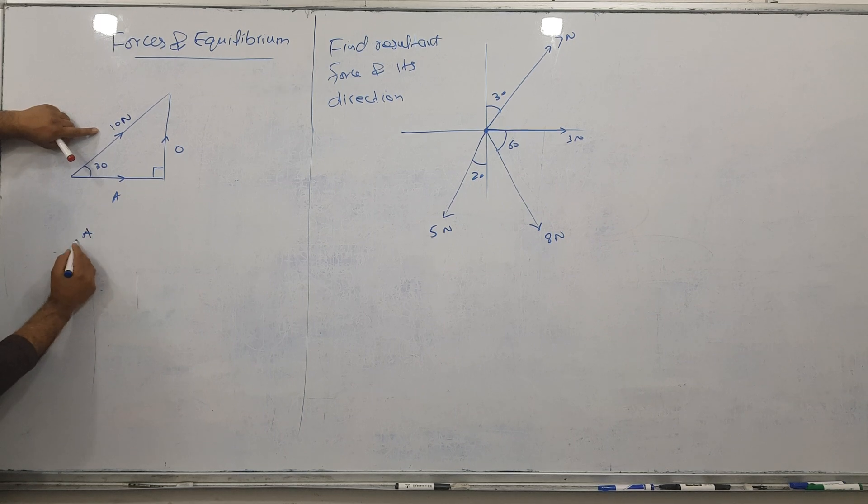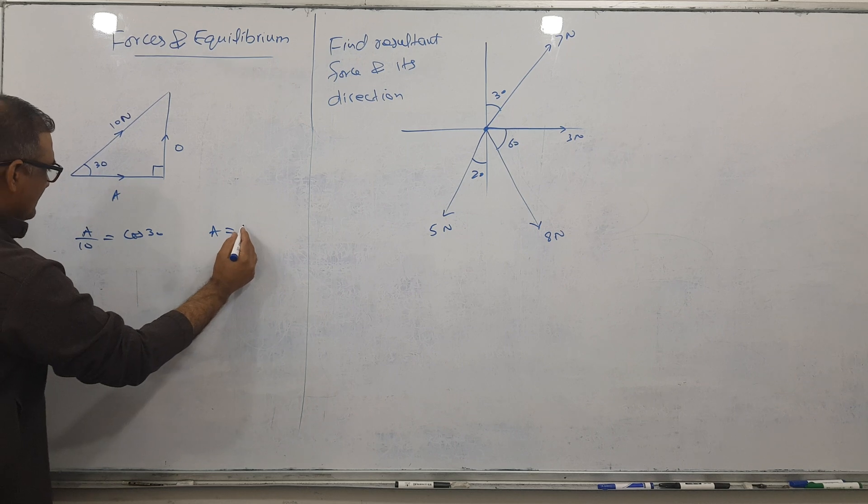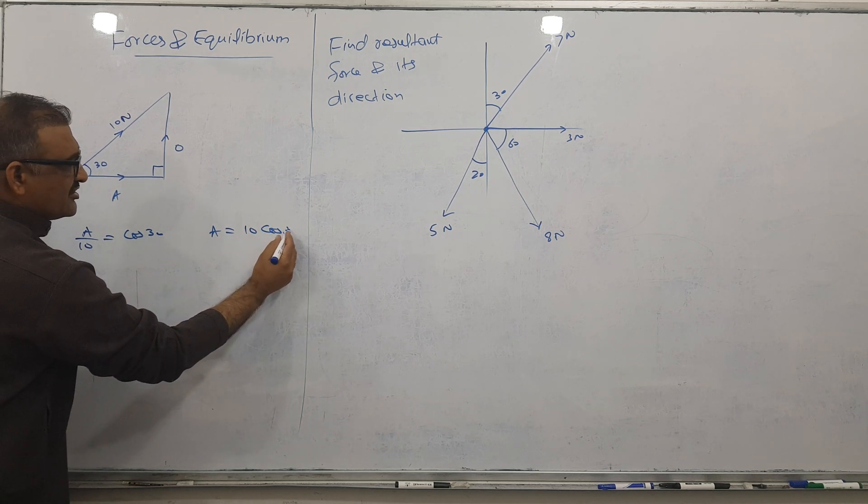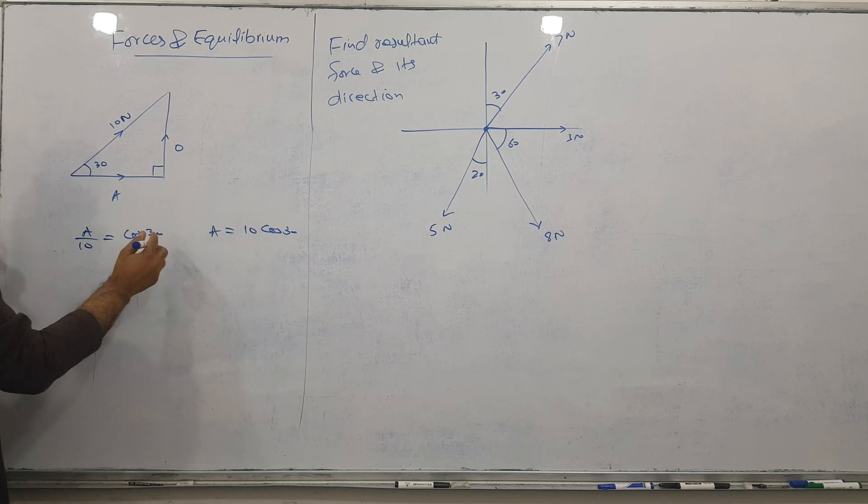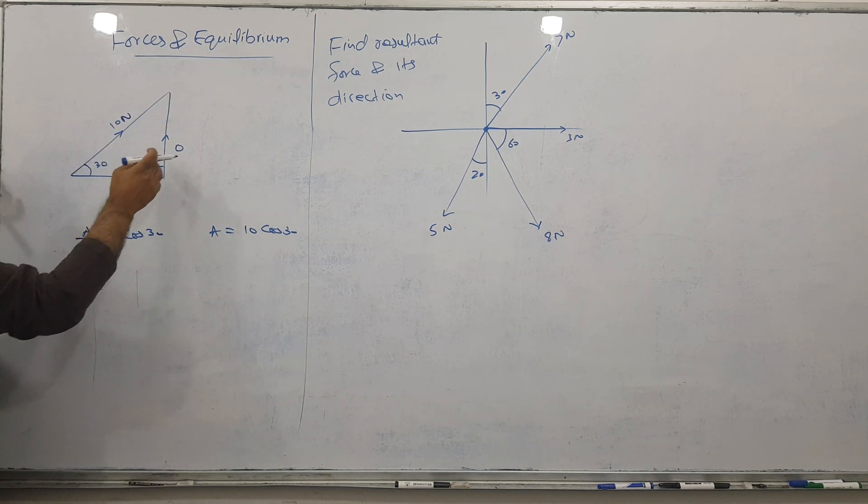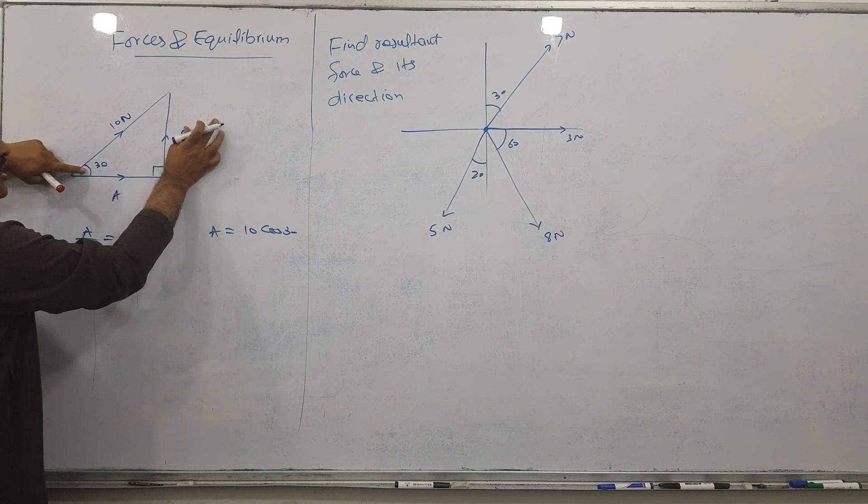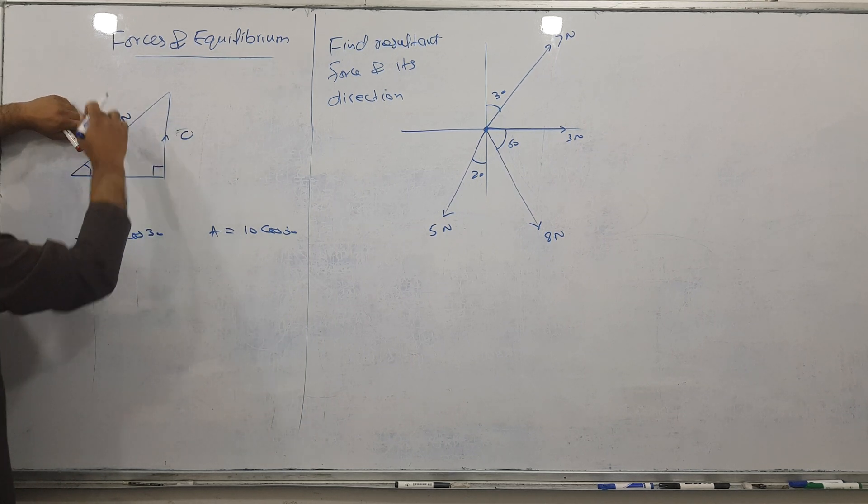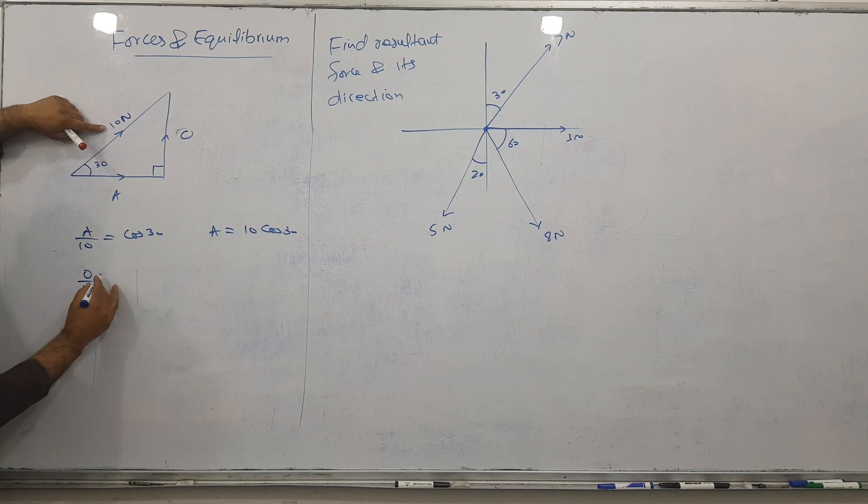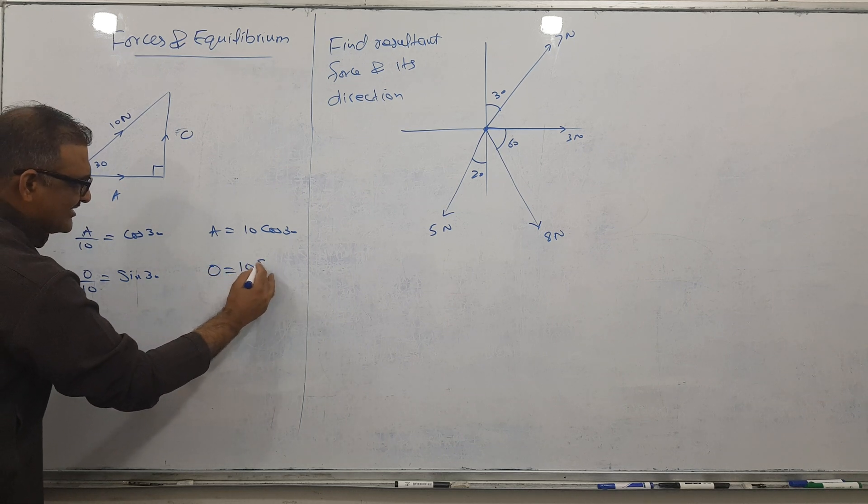How to find this? Adjacent by hypotenuse gives you cos theta, so it becomes 10 cos 30. If someone asks how to find the opposite - in front of the angle is called opposite. Opposite by hypotenuse gives you sine theta, sine 30, so you get 10 sine 30.